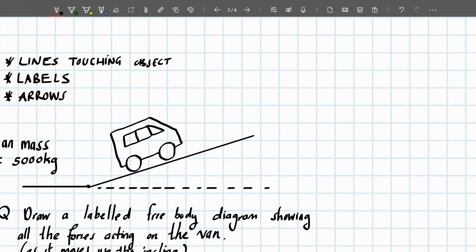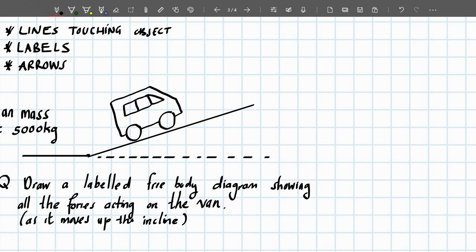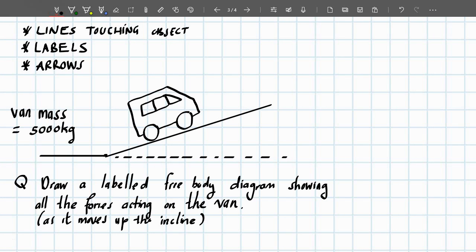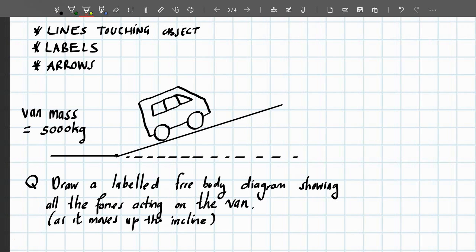We're just going to do a quick example of one of these. This example will be based on the 2014 physics paper 1. What we have here is a van of mass 5000 kg, it's going up a hill, and what we're required to do is draw a free body diagram showing all the forces acting on the van. First thing we need to note is that it is a free body diagram and not a force diagram.